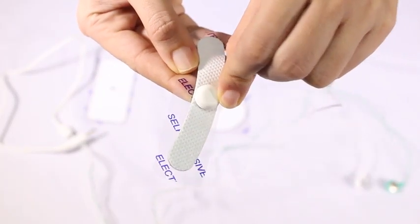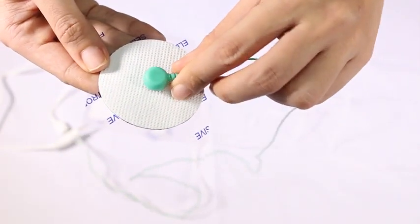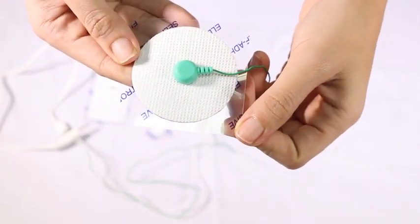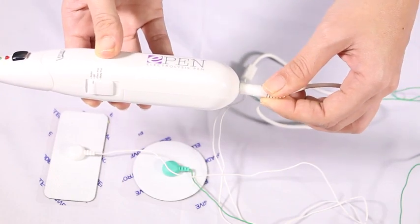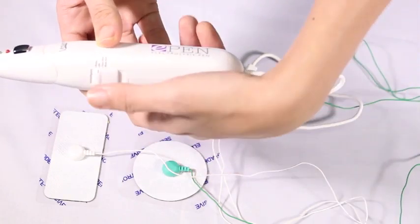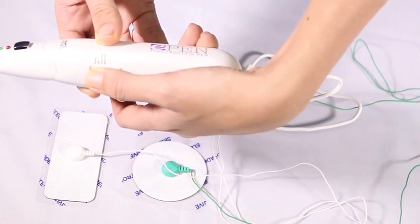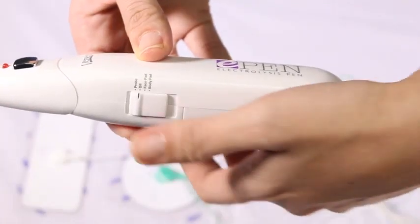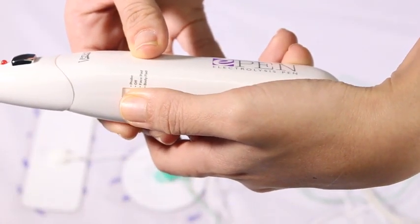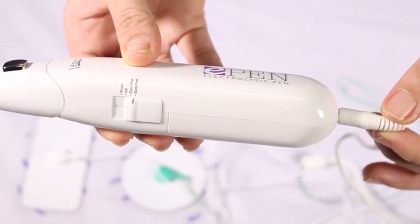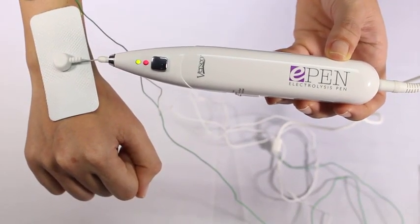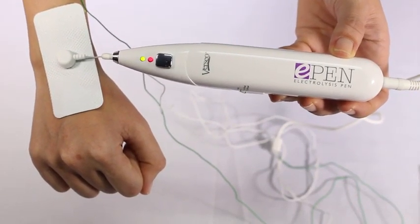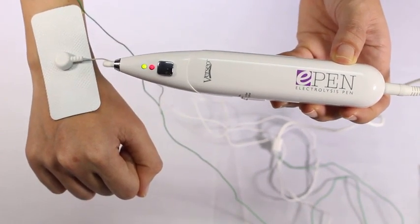Treatment using face and body patches: first, thoroughly clean the area. Switch to off position, then insert the LED into the jack socket at the end of the E-Pen. Now slide the mode to face or body pad. The red LED lights will illuminate to show power on. The green conductivity light illuminates to show good conduction.